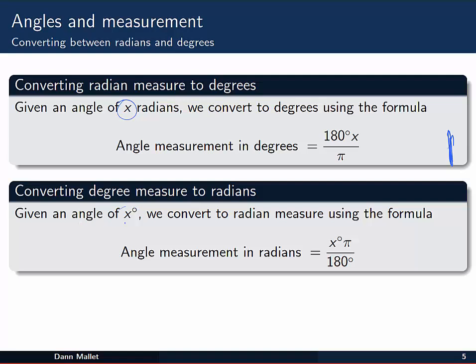In reverse, if we have an angle of x degrees and we want to convert to radians, we can use the opposite formula, which says the angle in radians is equal to x degrees multiplied by π divided by 180 degrees. So that gives us our angle measure in radians.